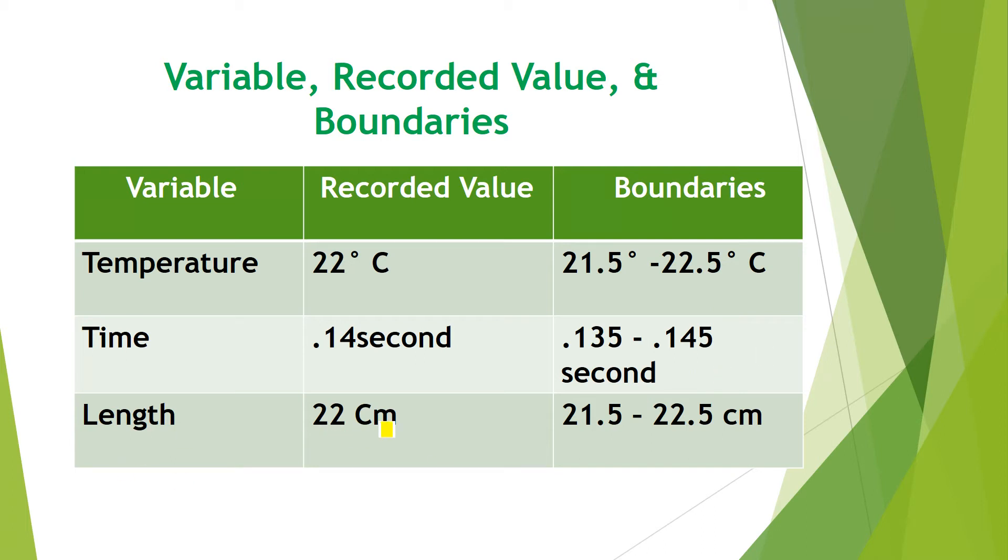We will discuss these boundaries in next chapter in more detail. Similarly, length is 22 centimeters. Suppose you have recorded, but its boundaries are 21.5 up to 22.5, but 22.5 is not included. If it is 21.6, you can make it 22 centimeters. If it is 21.7, you can write down 22 centimeters up to 22.5 centimeters.